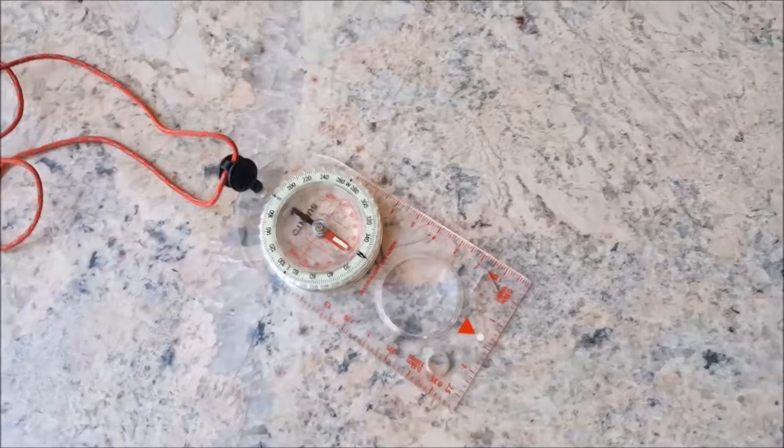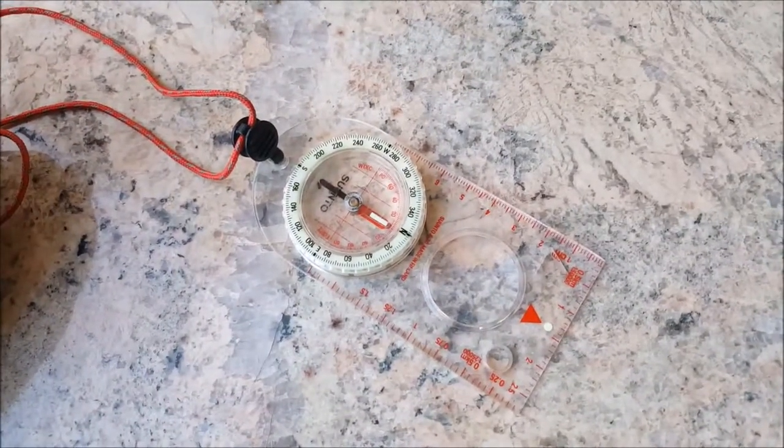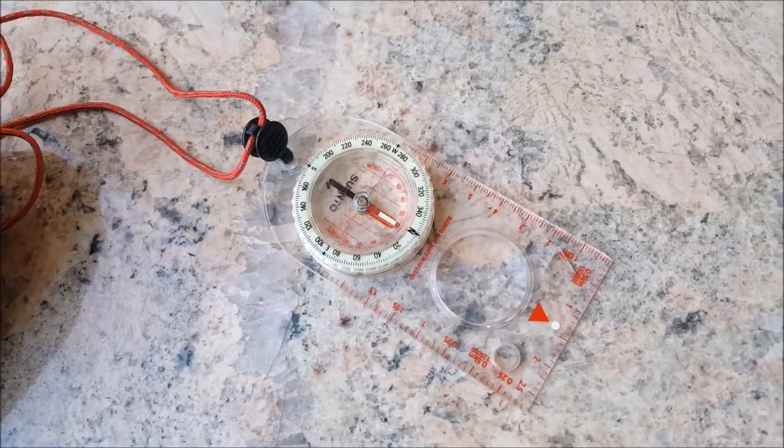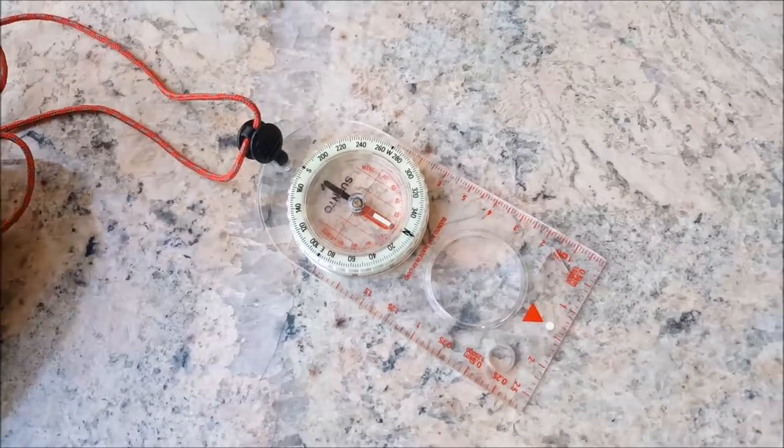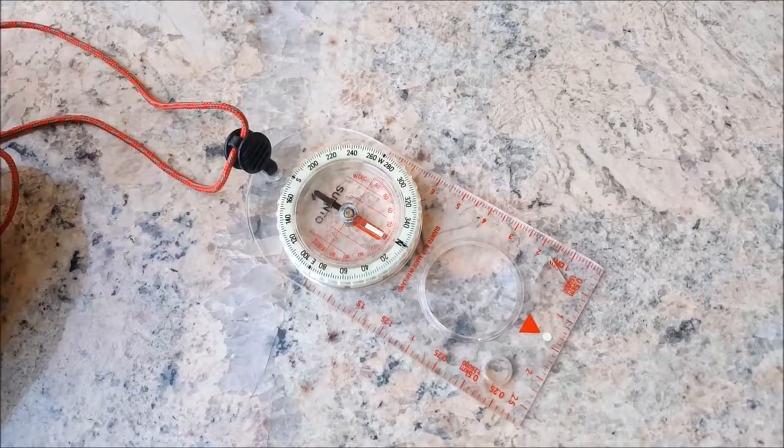I'll show you very briefly how to make an adjustment for it. In any area we're going to, you'll have your declination. We're going to assume the declination in this area is 20 degrees west.